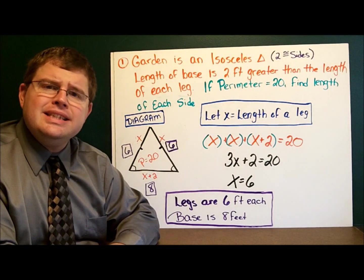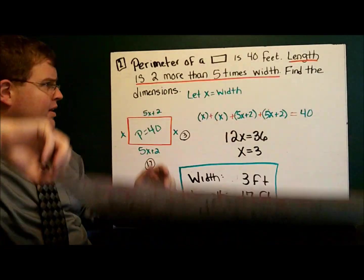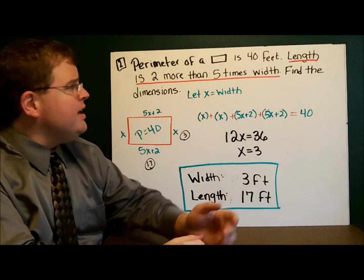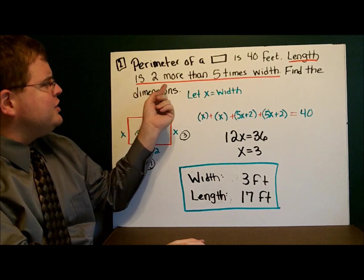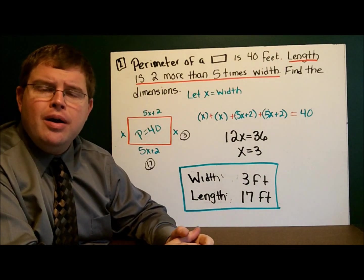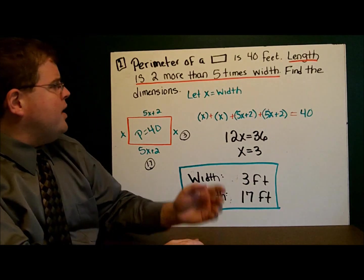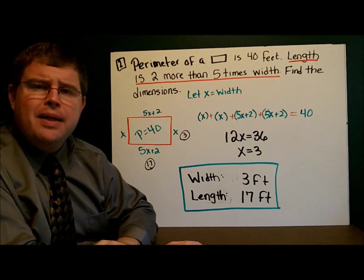Now in our next example we have a rectangle. And it says about the rectangle that the perimeter is 40 feet. It goes on to say the length is two more than five times the width. Well, I know about the length, but I know nothing about the width. And so I'm going to say let x represent the width.